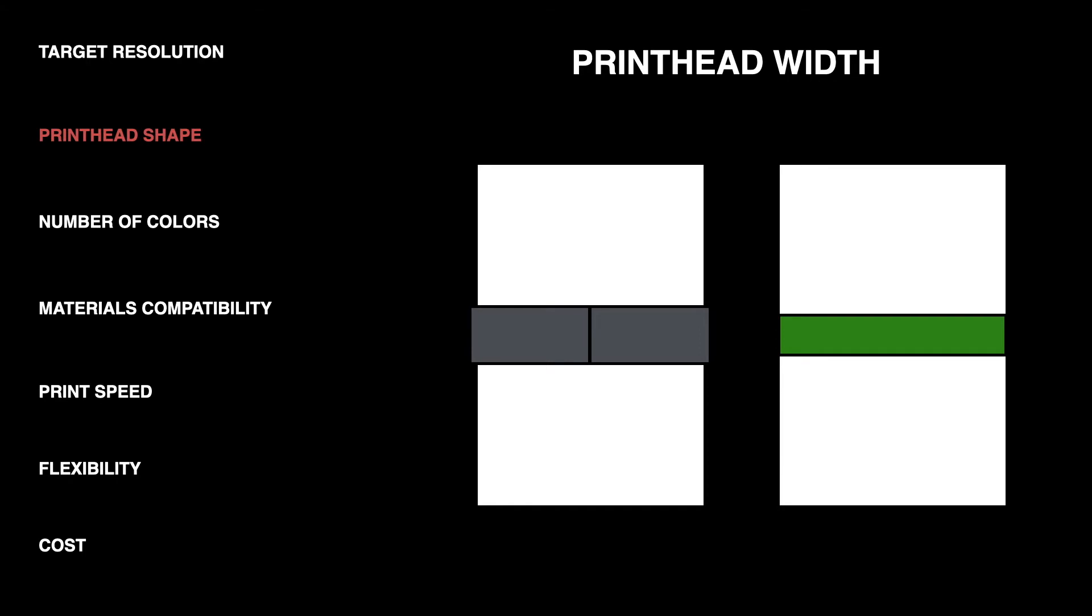As you can see in our diagram here the green printhead on the right is probably going to be easier to design a system around for this application rather than using two of the gray printhead on the left. You also don't really want too wide of a printhead because the printheads tend to be priced per nozzle so you don't really want to be paying for more nozzles than you need.